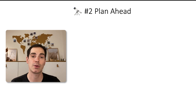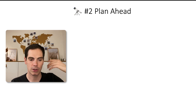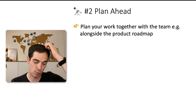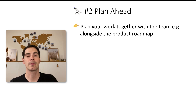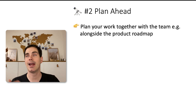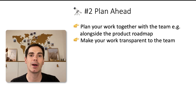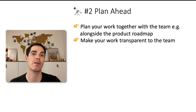The second tip is to plan ahead. Doing a daily task breakdown for yourself is really helpful to structure your mind and to not think about too many things at the same time. But you should also plan ahead. When I was working in an agile team, I planned my work together with the team and alongside the product roadmap. If you'd like to introduce test automation in your team, for example, plan it side by side with the product roadmap — make a test automation plan and align it with product development. Make it transparent to the team so everybody knows what you are working on.